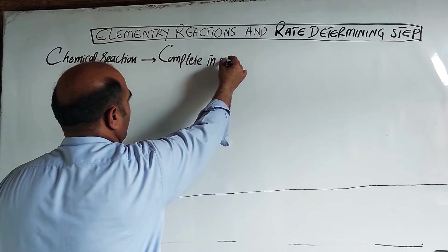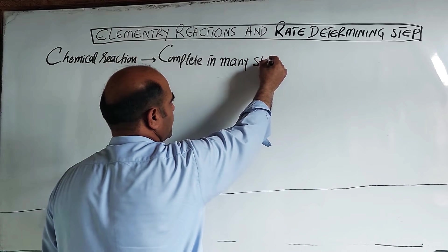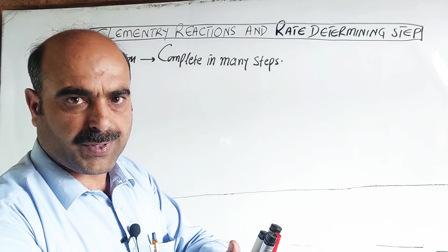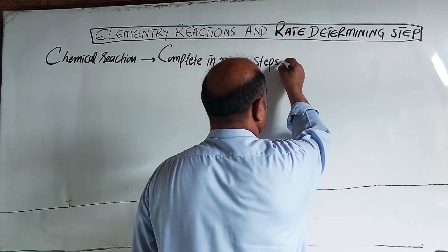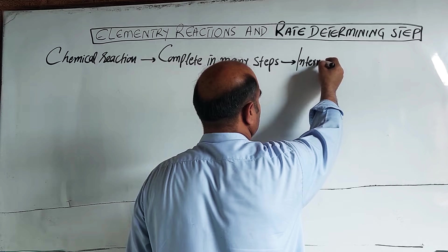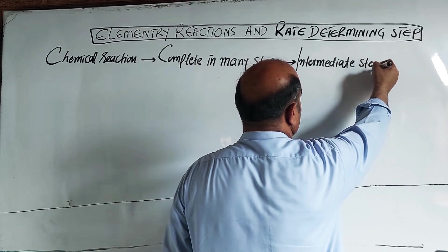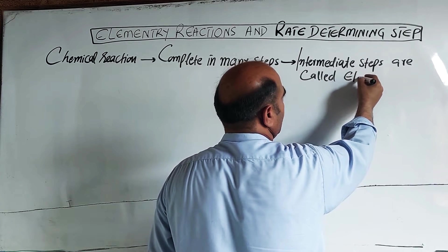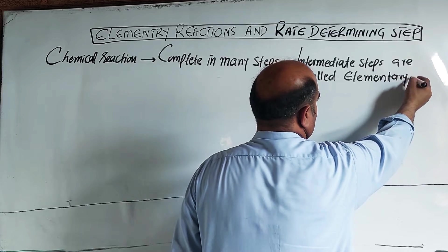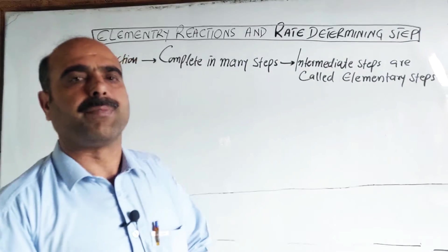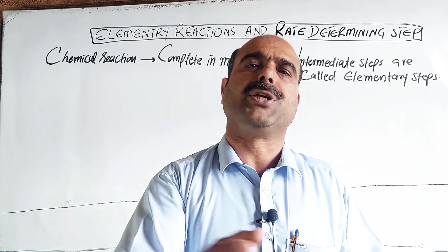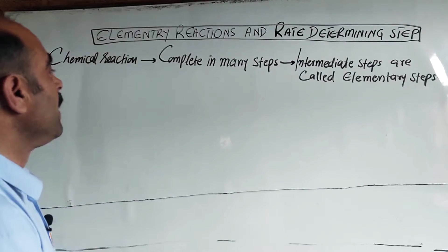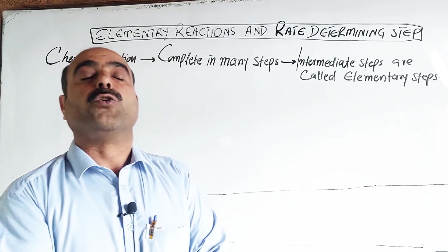A chemical reaction completes in more than one step, in many steps. These various intermediate steps or reactions are called elementary steps, also known as elementary reactions. The intermediate steps that combine to complete the net reaction are called elementary steps or elementary reactions.